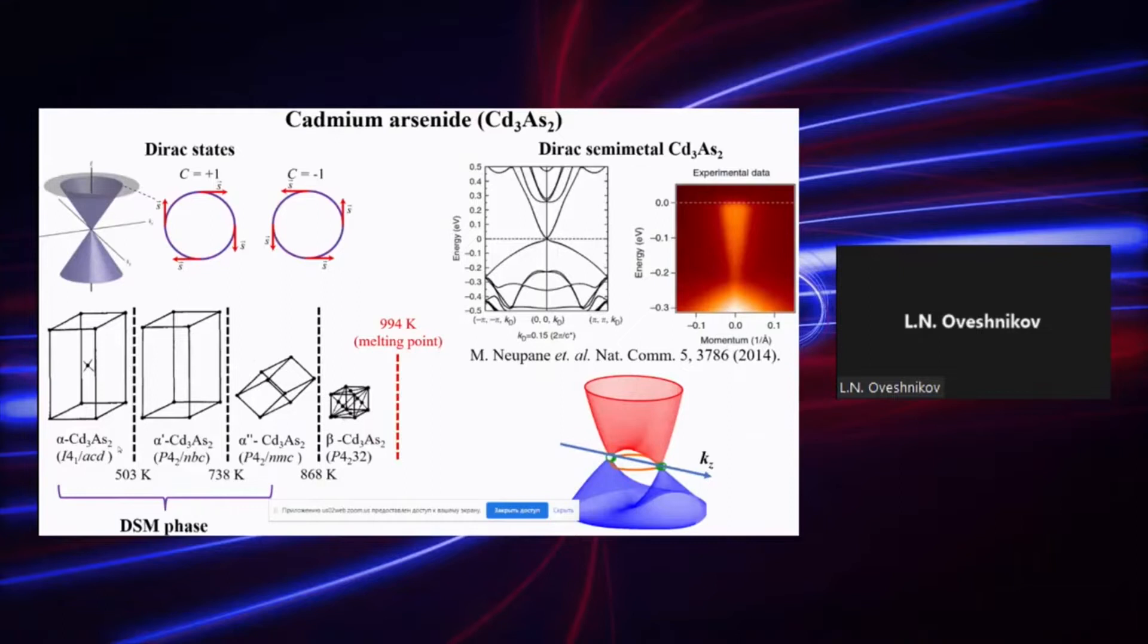Existing theoretical models couldn't explain it properly and it remained a mystery up until recent days. The interest in investigation of this compound has been renewed several years ago after theoretical prediction that cadmium arsenide can host Dirac semimetal phase. Basically, the Dirac states are characterized by gapless linear dispersion and spin chirality phenomena, which is also often referred to as spin momentum locking.